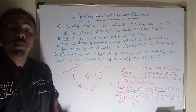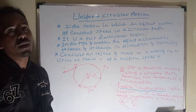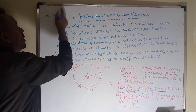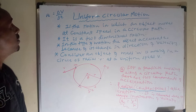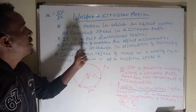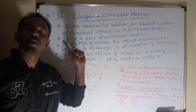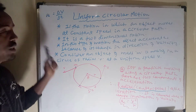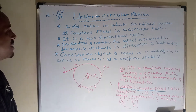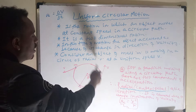In uniform circular motion, speed is constant. However, acceleration is defined as the change in velocity over change in time. Even though speed is constant, acceleration still exists in uniform circular motion because the body follows a circular path.